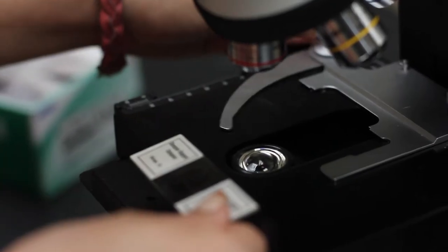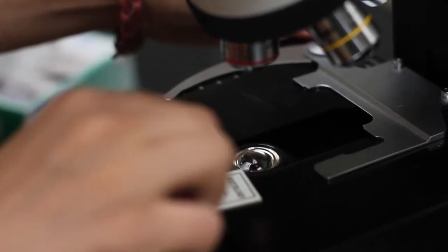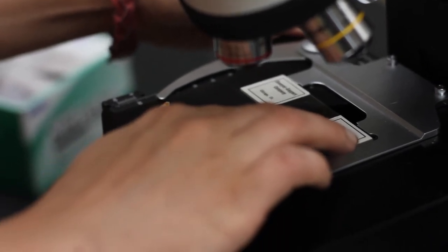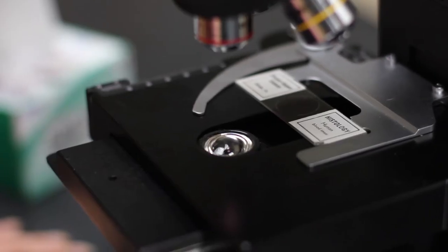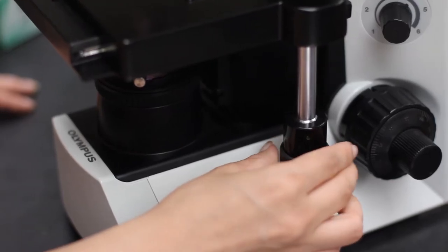Place the slide in the stage clip. Ensure that the slide is flat and secure and that the cover slip is facing up. Adjust the x and y axis to orient the specimen over the light source.